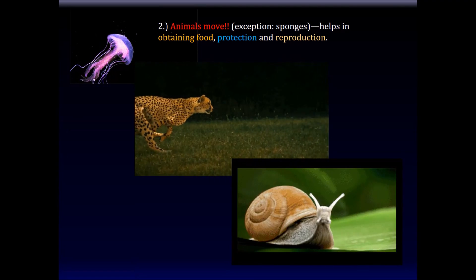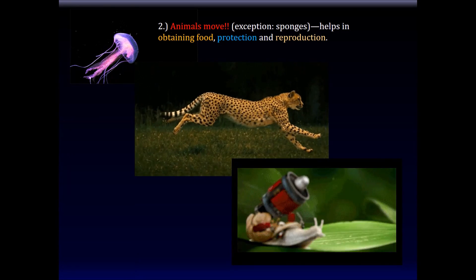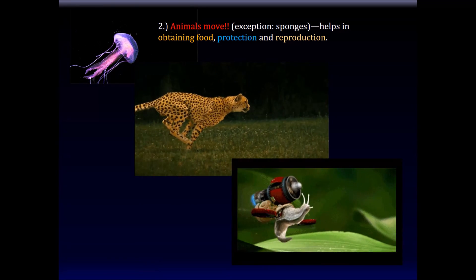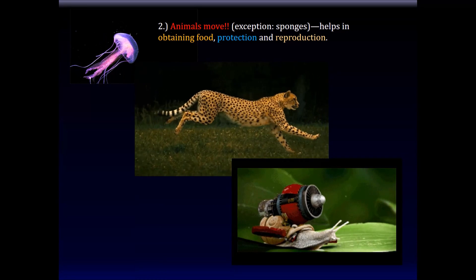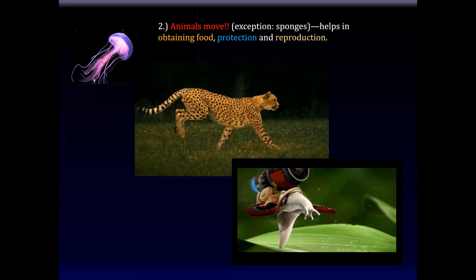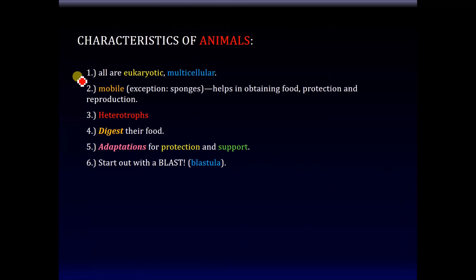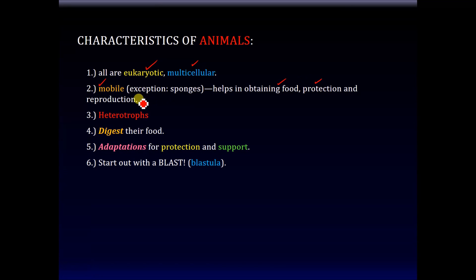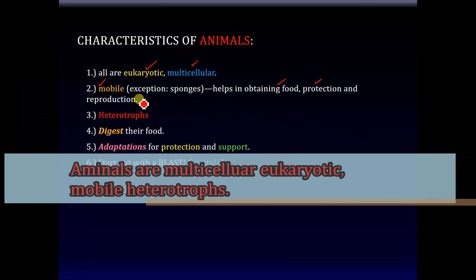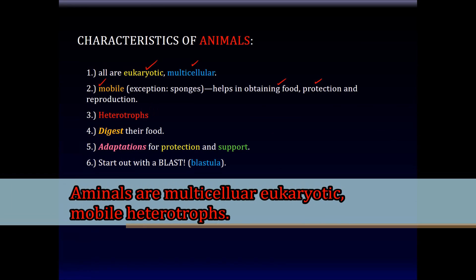Except for sponges, which are sessile — that is, they do not move. Mobility is advantageous in obtaining food and in protection, that is escaping from a predator, and also has a survival advantage. Animals are mobile, and this definitely gives them a survival advantage in obtaining food, protecting themselves from predators, and in reproduction. Third, they are all heterotrophs.